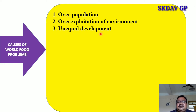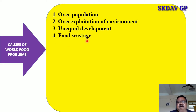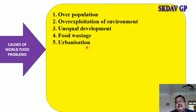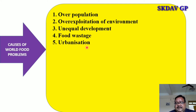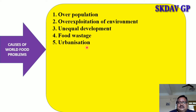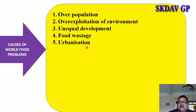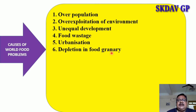Unequal development — development is not equal throughout the globe. Food wastage — huge quantities of food are being wasted almost every day. Then, urbanization — rural areas are gradually destroyed as forests are cleared for factories and housing, and therefore food production is decreasing drastically. Depletion in food granaries — the quality of food grains are also decreasing day by day.